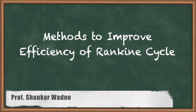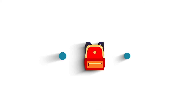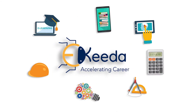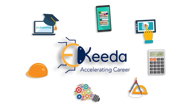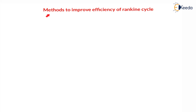Hello my dear students. In this lecture we are going to see methods to improve efficiency of Rankine cycle. Basically there are two types of methods: one is reheat and the other is practical regeneration cycle. Before understanding this topic, my assumption is that you are already familiar with Rankine cycle and have seen my previous lectures — at least lecture number 1 and lecture number 2. So without wasting time, let us understand the methods to improve the efficiency of Rankine cycle.